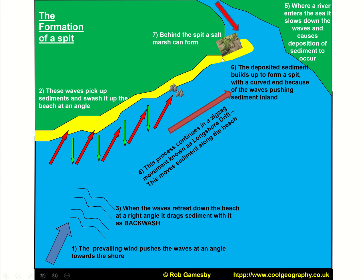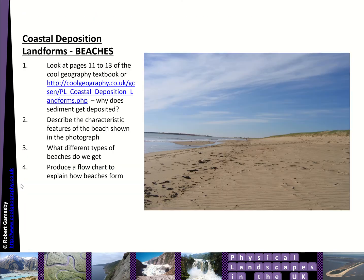If the spit were to extend all the way across the river mouth — perhaps where a river flows very slowly and isn't very powerful — that would be what we call a bar. A bar is where sediment stretches from one coastline across to another, completely blocking it off, and a lagoon may form behind it.